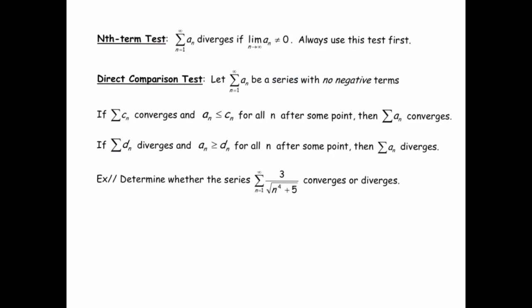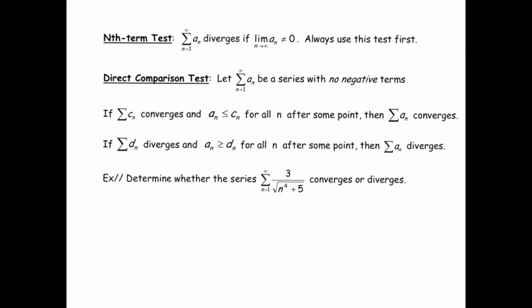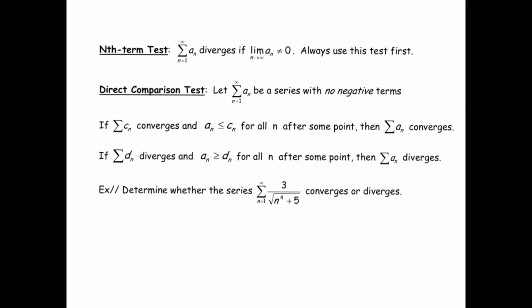So the first test you want to use when you're analyzing the convergence of an infinite series is the nth term test. Think of it as like the first hurdle that a series has to get over. Remember, this a sub n, whatever the sequence is inside the series, that has to go to zero. If it doesn't go to zero, then we have no hope of this infinite sum actually converging to anything. It would clearly go off to infinity.